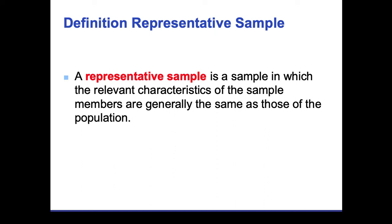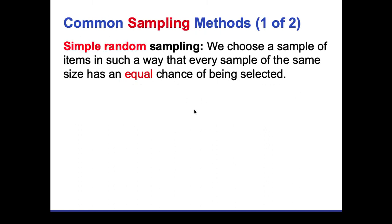There are common sampling methods. The first is simple random sampling — it says 'simple' in the title but isn't as straightforward as you might think. It's like putting everyone's names in a hat, mixing them up, and pulling one out. In that sense, everyone has an equal chance of being selected. This method isn't used as much, but it is used in simpler research endeavors.